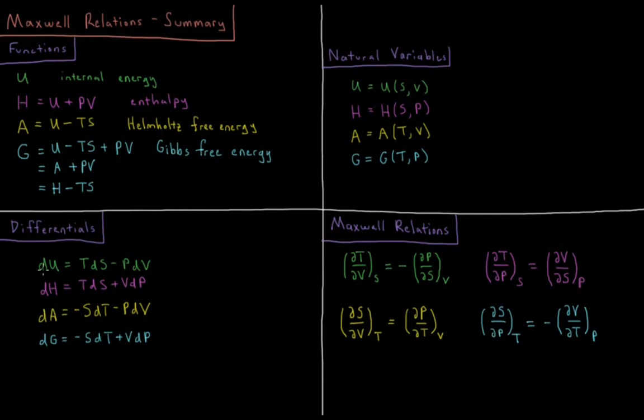So the differentials of these various thermodynamic state functions come from the following. We have dU, the change in internal energy, equal to the heat during a reversible process, TdS, plus the work that occurs when the volume changes, minus PdV.